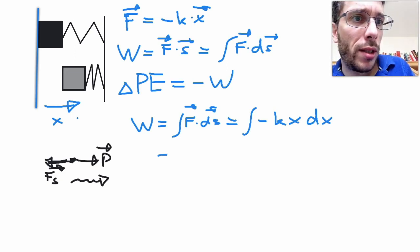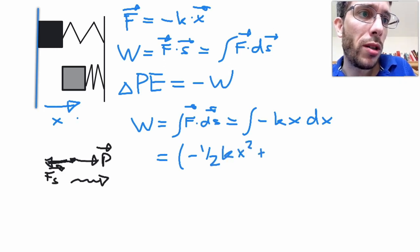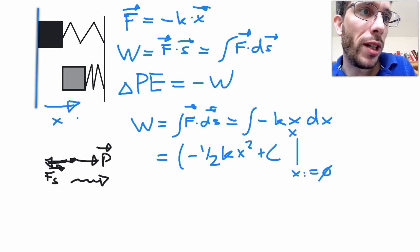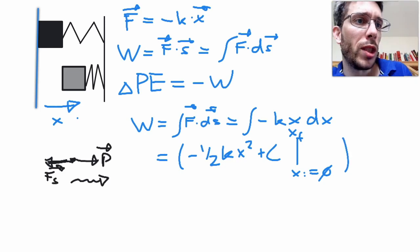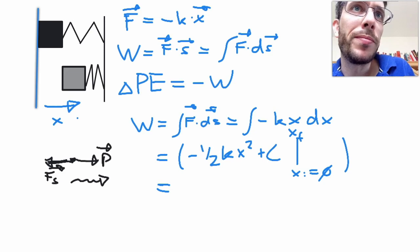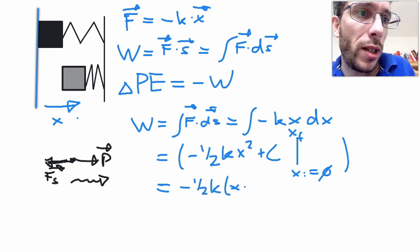So if I integrate that, I get minus one-half kx squared plus my integration constant. And I'm going to evaluate this from my x initial being zero to my x final. So what I get is that my work is minus one-half times the spring constant times x final squared minus x initial squared.